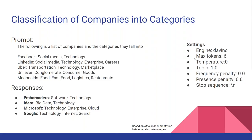Here's an example of classifying companies into categories. The prompt is: 'The following is a list of companies and the categories they fall into,' followed by a few examples. I added Embarcadero, and it came back with software technology. I said IDERA — it said big data and technology. Microsoft — technology, enterprise cloud. Google — technology, internet search. It probably should have said advertising in there, since that's really Google's main source of income, but it's interesting that it produces that.